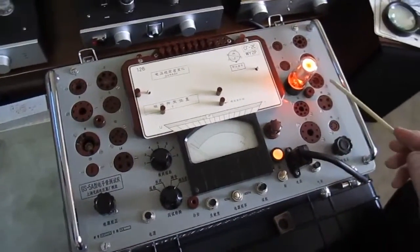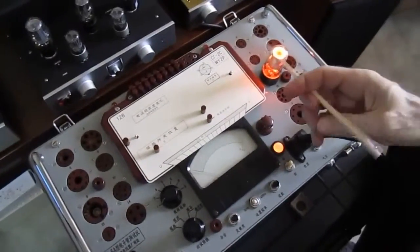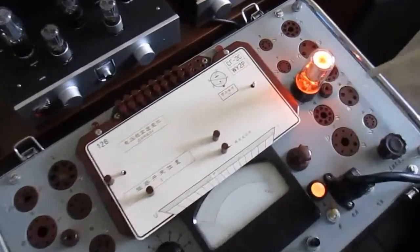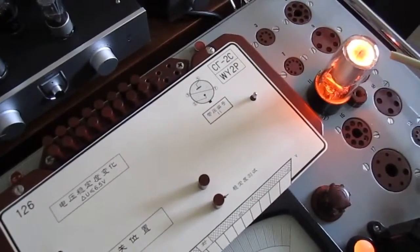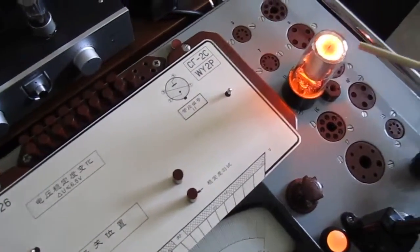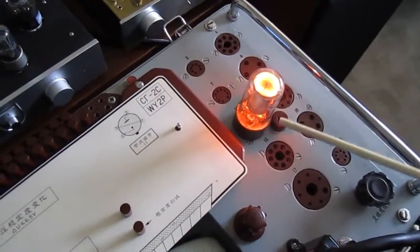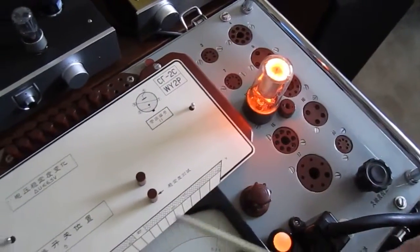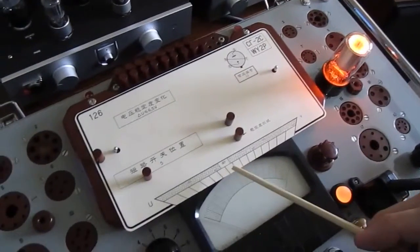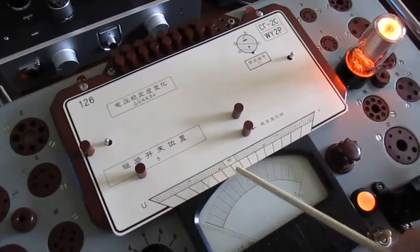All right, so what I've done is started up with the WI2P tube. This is a 75 volt regulator tube. And what we do in this particular tester is we'll first check the voltage. I'll show how to do that in a moment.